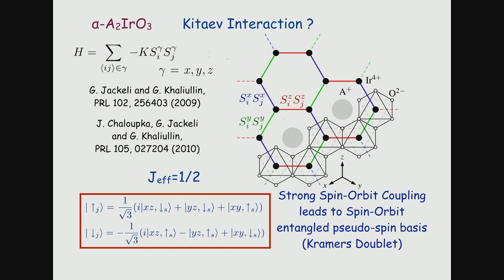Under edge-sharing conditions, Jackeli and Khaliullin showed that starting from the pseudospin-1/2 degree of freedom — obtained as a consequence of strong spin-orbit coupling in iridium — you can derive an interesting bond-dependent Ising interaction. Depending on the bond direction (red, blue, or green), you get a different component of the Ising interaction. Along the blue direction, for example, you only have an Ising interaction along the X component of spin.